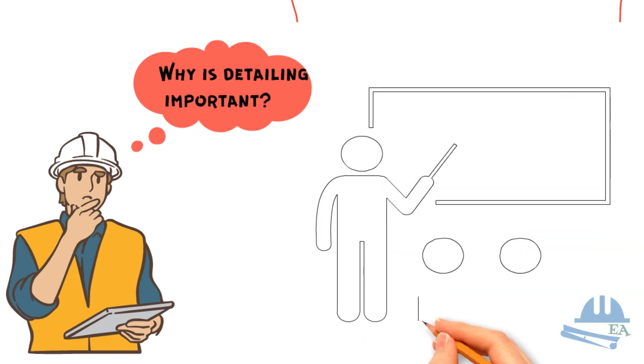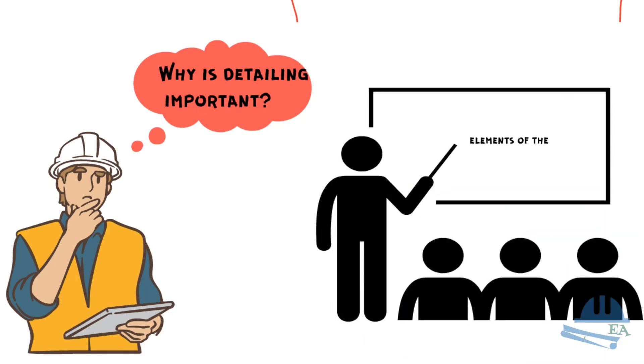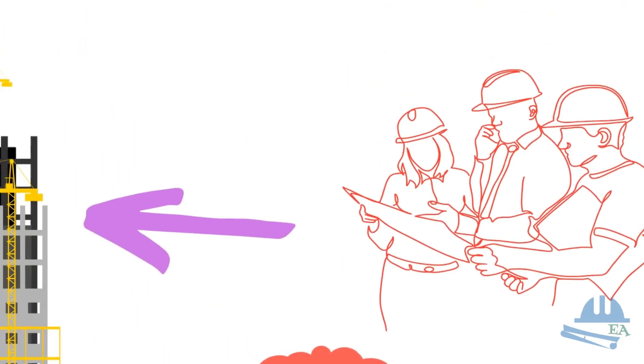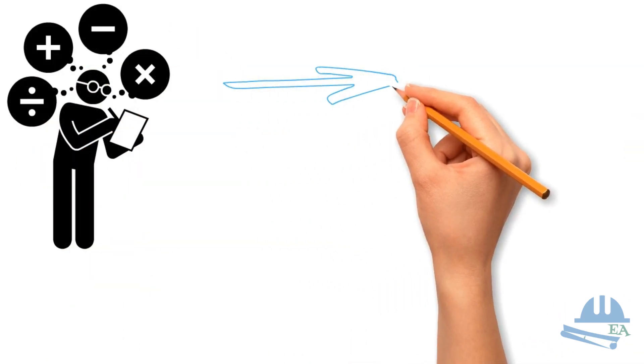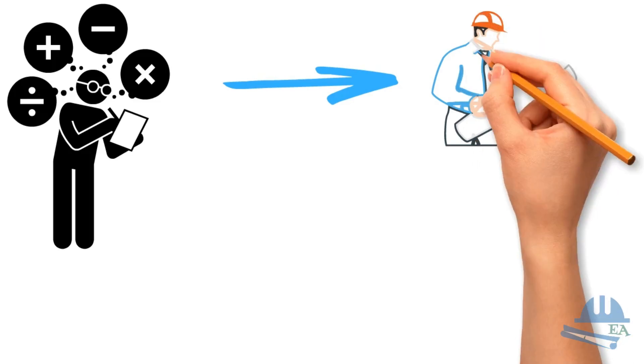Why is detailing so important? Accurate detailing ensures that all elements of the structure are properly integrated and capable of performing their intended functions. It translates the design calculations and theoretical models into practical instructions that can be followed during construction.